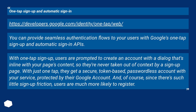From Google's One-Tap Sign-Up and Automatic Sign-In documentation: 'You can provide seamless authentication flows to your users with Google's One-Tap Sign-Up and Automatic Sign-In APIs. With One-Tap Sign-Up, users are prompted to create an account with a dialogue that's in line with your page's content, so they're never taken out of context by a sign-up page. With just one tap, they get a secure, token-based, passwordless account, protected by their Google account.' And since there's such little sign-up friction, users are much more likely to register.